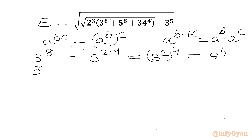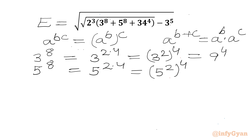Similarly, 5^8 can be written as 5^(2×4), or 5² whole power 4. Now 5² is 25, so this will be 25^4.